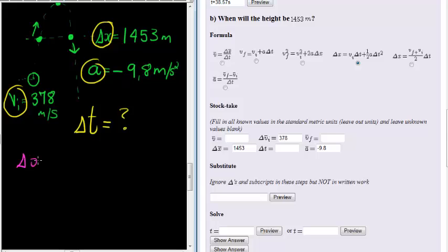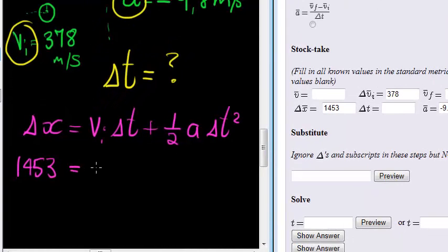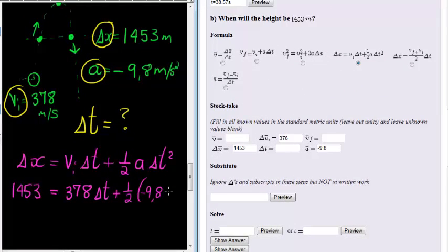We have delta, this is the formula. Delta x is equal to initial velocity times delta t plus a half a delta t squared. Now with this we have 1453 meters is equal to initial velocity, which is 378 times delta t, which is what I want to calculate, plus a half times negative 9.8 times delta t squared.